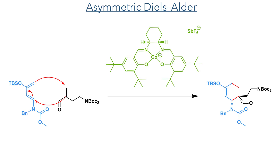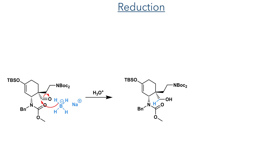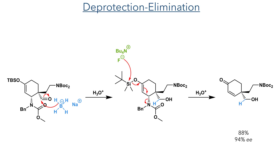The synthesis started with an asymmetric Diels-Alder reaction of Rawls-Diene using a chiral cobalt catalyst. The product of this reaction was then reacted with sodium borohydride to reduce the aldehyde, and the TBS group was then removed using TBAF. This silyl deprotection generates a negative charge that promotes an E1-Cb elimination of the carbamate group, resulting in the formation of an enone in an 88% yield with 94% ee.